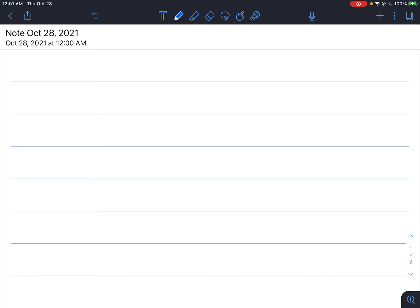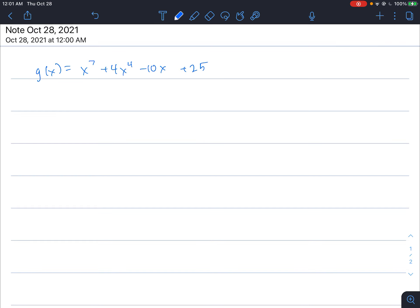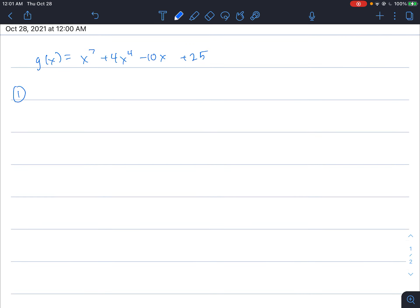In this problem we'll use the function g(x) equals x to the 7th plus 4x to the 4th minus 10x plus 25. The first thing I do when using Descartes' rule of signs is to find the number of sign changes in g(x).